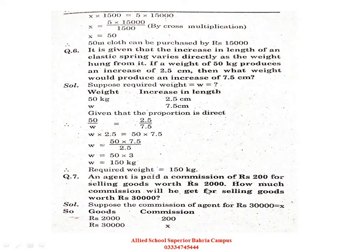Rupees 2000 worth of goods earned a commission of 200 rupees. If the agent sells goods worth 30 thousand rupees, what would his commission be? Let us see the solution: suppose the commission of an agent for rupees 30 thousand is equal to X.